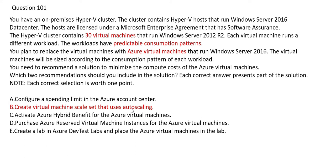Option B suggests auto scaling, which is not needed here. As explained, the consumption pattern is predictable. Since you can predict that you need, say, 10 virtual machines, you plan for exactly 10 — you don't start at 3 and scale up. Auto scaling may not help reduce compute costs when the pattern is already known.